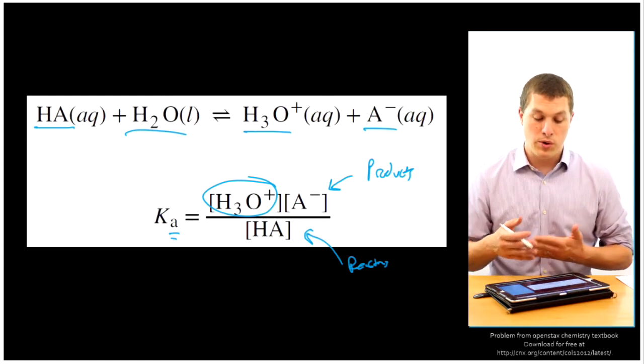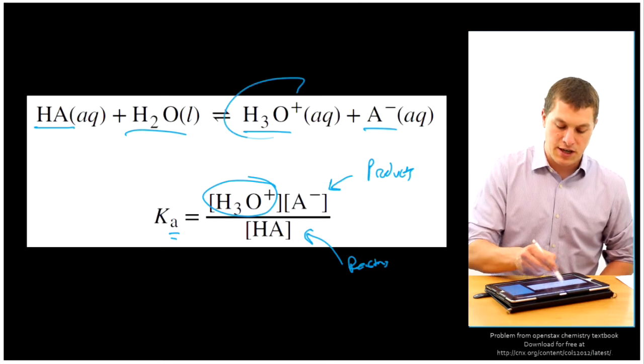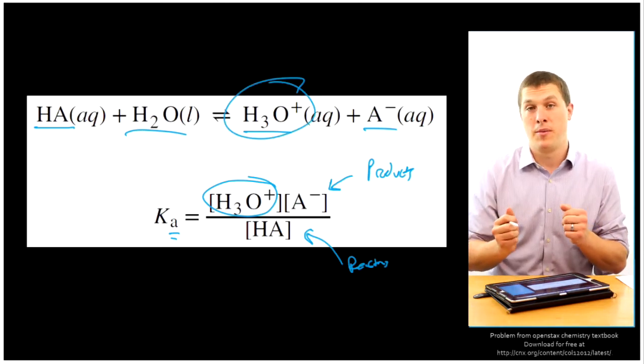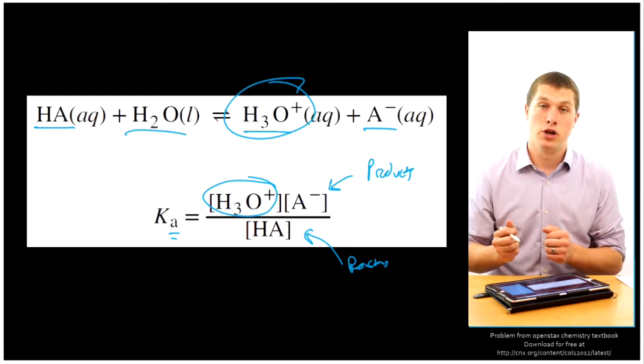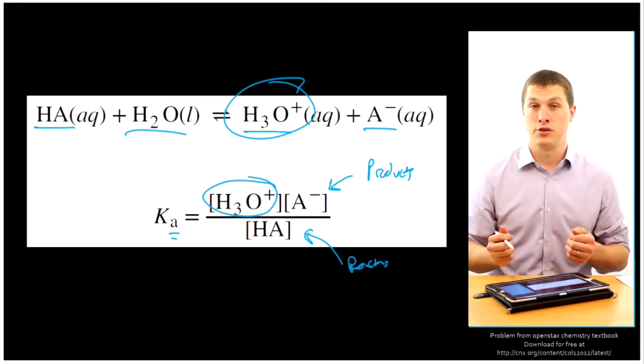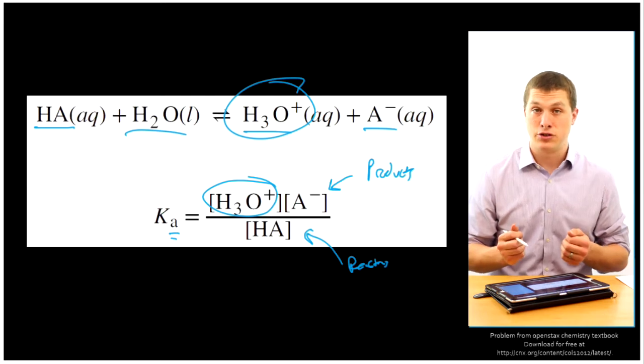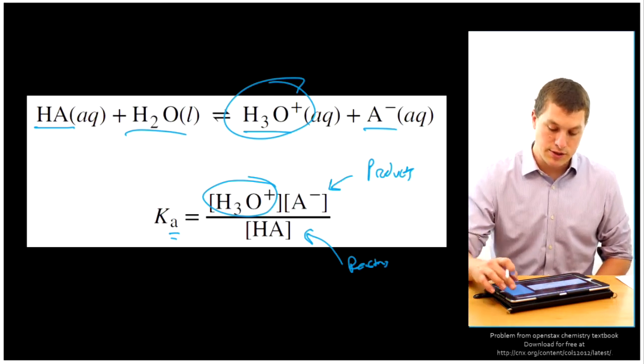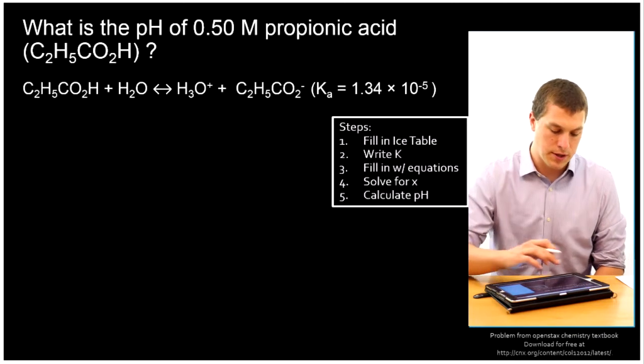This is really important when we go to calculate pH, because our pH depends on how much of this stuff is around. And the more of it dissociates, that means we're going to get more hydronium ions in solution, and hence a lower pH. The less of it that dissociates, that means we'll get less hydronium ions and a higher pH. Let's take a look at a calculation that uses these sorts of equilibrium constants.